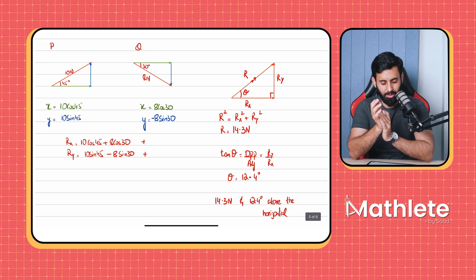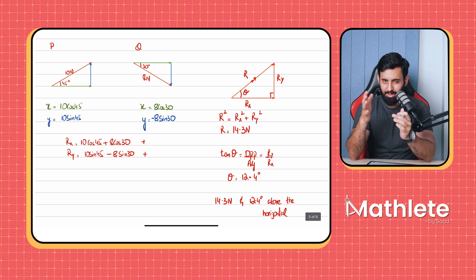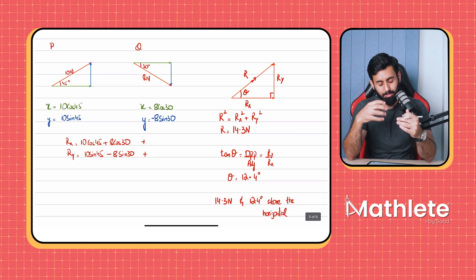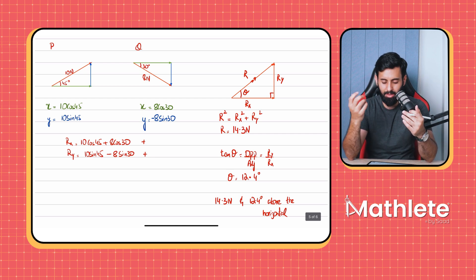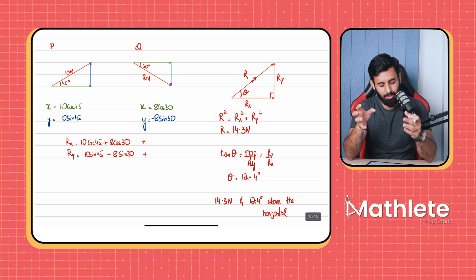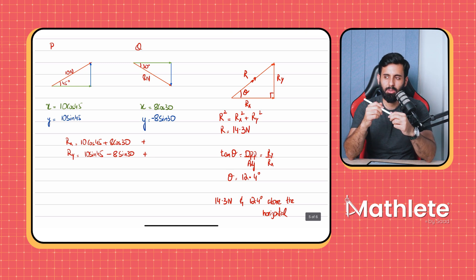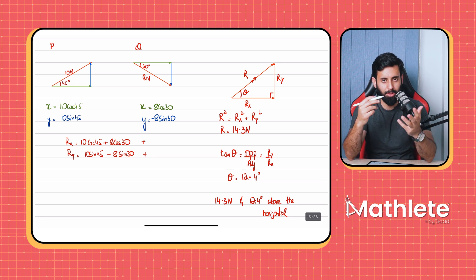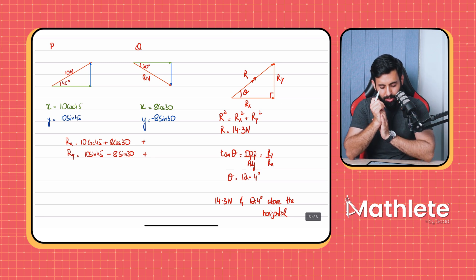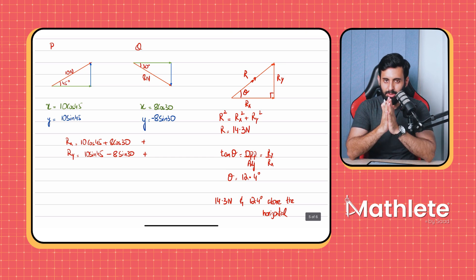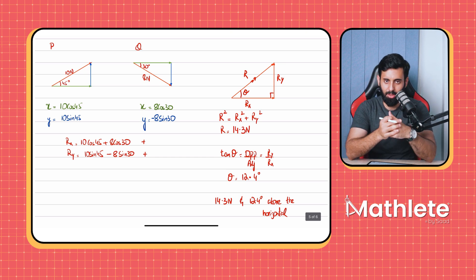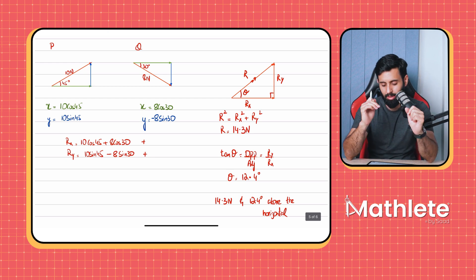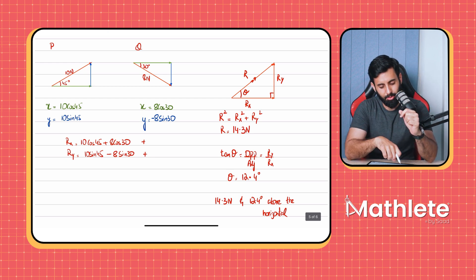That's Method 1. It's neat, systematic, and you can see what's going on at every step. A limitation is that it's better used when you have only two forces. Whatever method you choose, make sure you work through it step by step so you don't get lost.